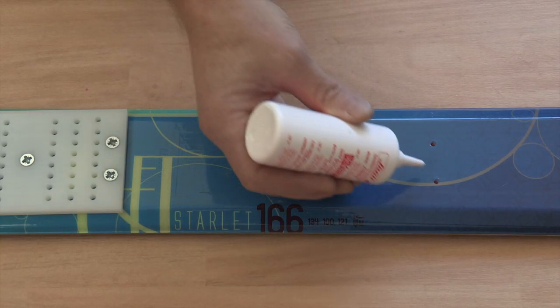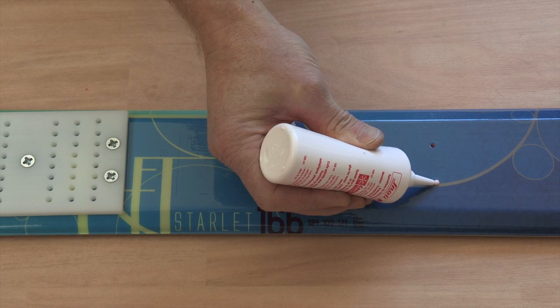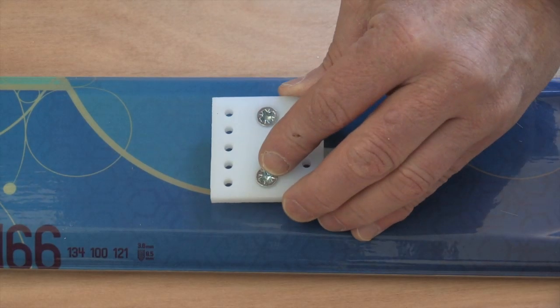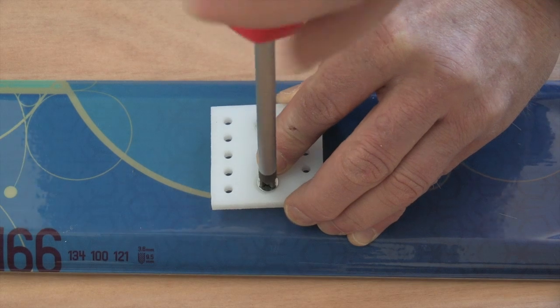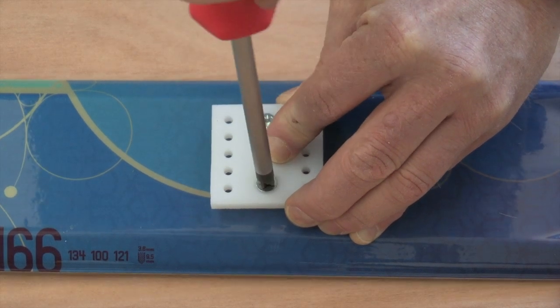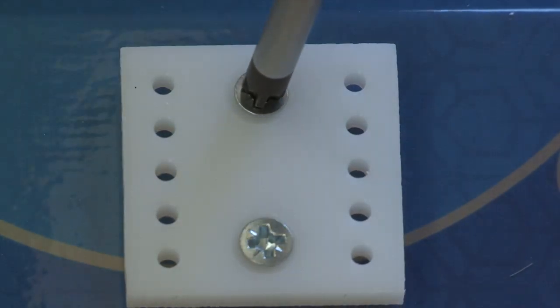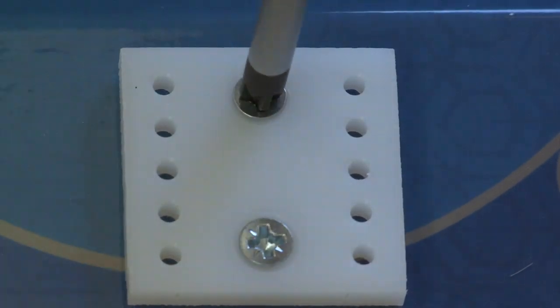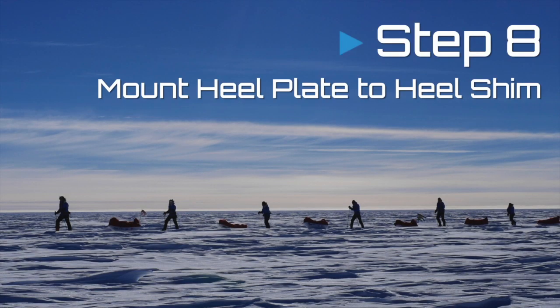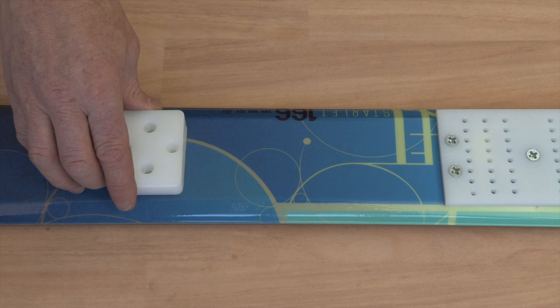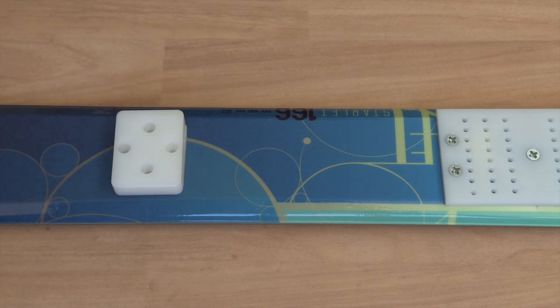Drill, remove the shavings, add glue and mount the heel shim onto your ski. Now mount the heel plate onto the heel shim. No glue is required.